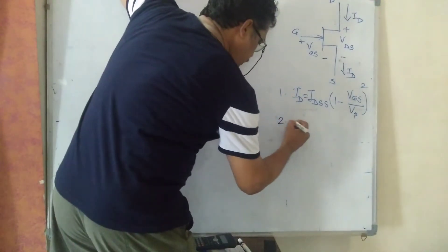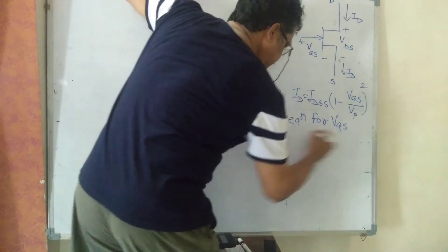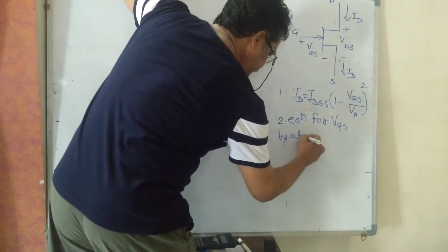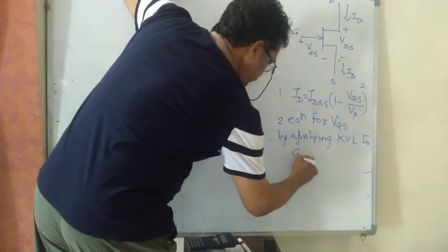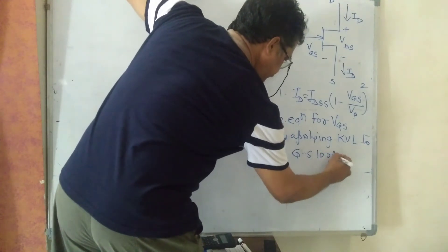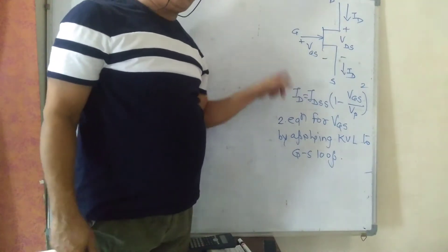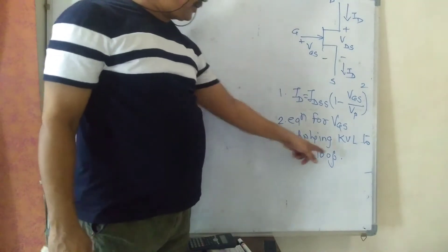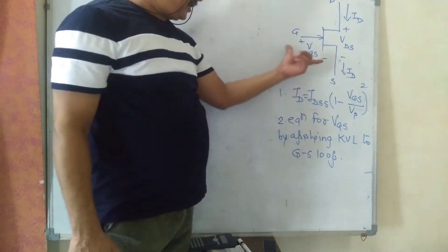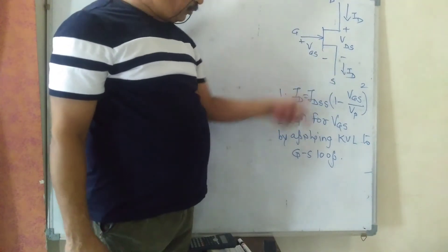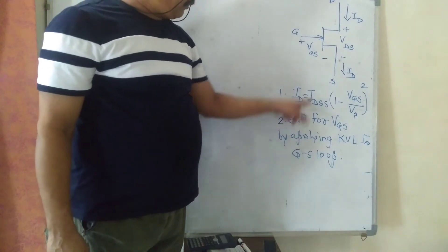Equation 2 is the equation for VGS, obtained by applying KVL to the gate-source loop. Yesterday we wrote the equation for the KVL base-emitter loop in BJT. Similarly, here we write the equation for the gate-source loop — in place of base there is gate, in place of emitter there is source. That equation will give us VGS. Put equation 2 into equation 1 and solve.